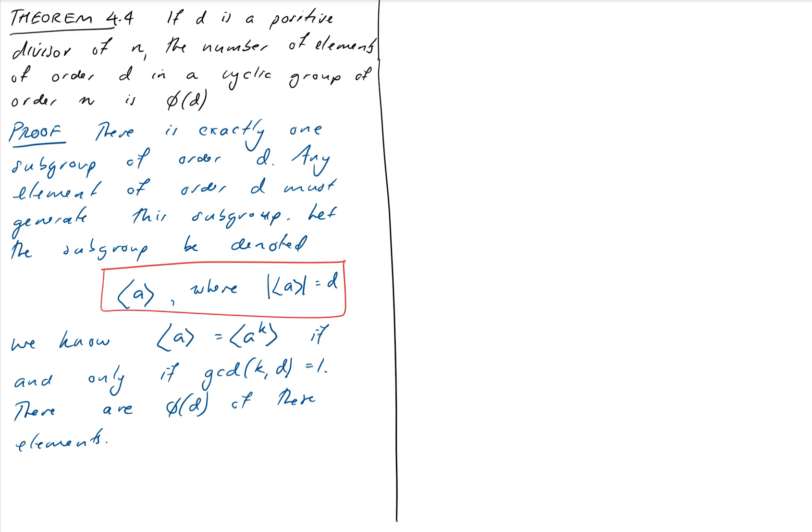So if we built our subgroup and we just gave it a name, cyclic subgroup generated by A, so that is a subgroup of order D. And we know that another element in that cyclic subgroup, A to the K, is only a generator if K is relatively prime to the order of that subgroup, which is D. And by definition, there are only phi of D of these numbers. So that proves the theorem.